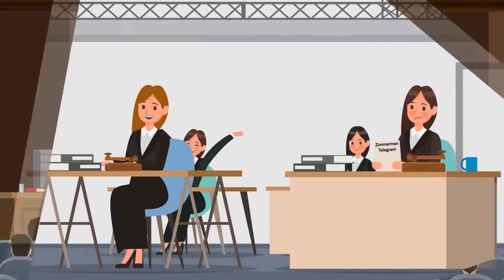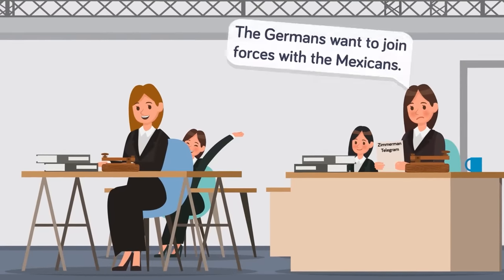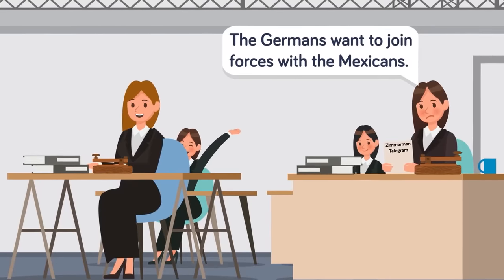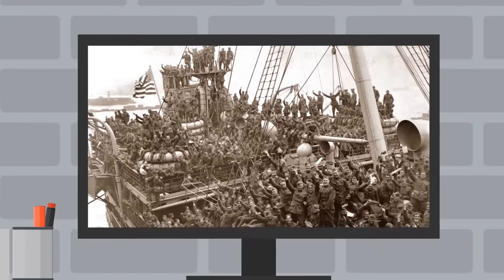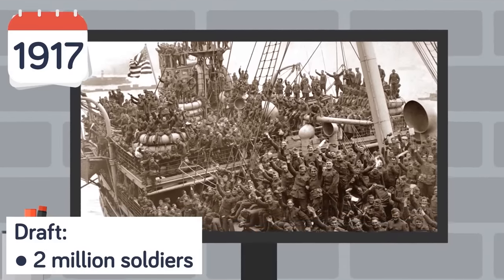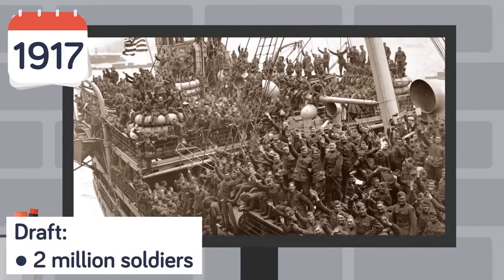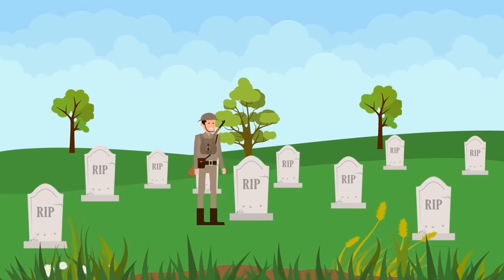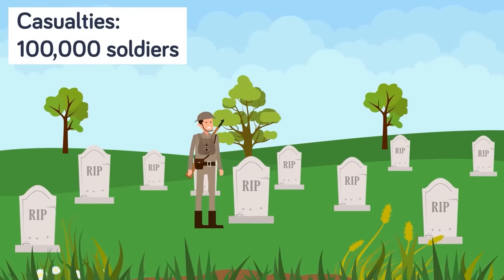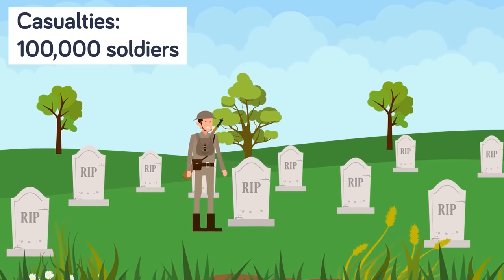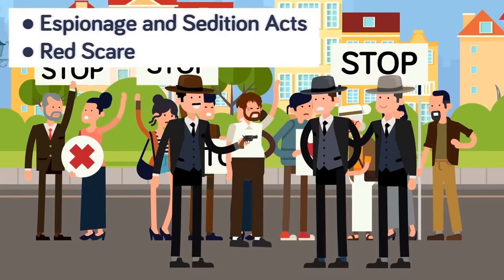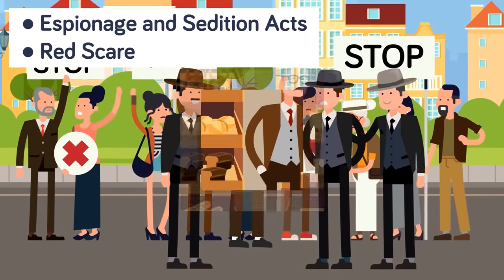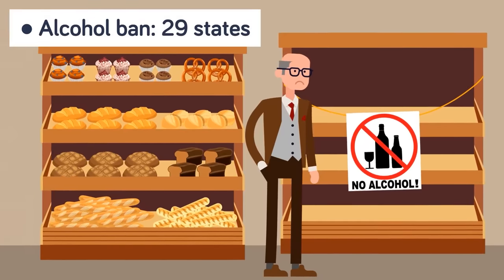But his campaign promise wasn't to be. Not long after his election victory, the Zimmermann telegram was intercepted — a message where the German Empire promised to help Mexico reclaim lost territory if they assisted them against the Americans. That was enough, and the U.S. entered World War I in 1917. It would be the most brutal war in the country's history yet, with a massive draft sending over two million men abroad to fight. Over 100,000 ultimately died, and things were rough on the home front as well. The espionage and sedition acts sent many anti-war activists to prison, and Wilson cracked down on the communist movement in what would become the first Red Scare. Prohibition was sweeping the nation, with alcohol banned in 29 states.